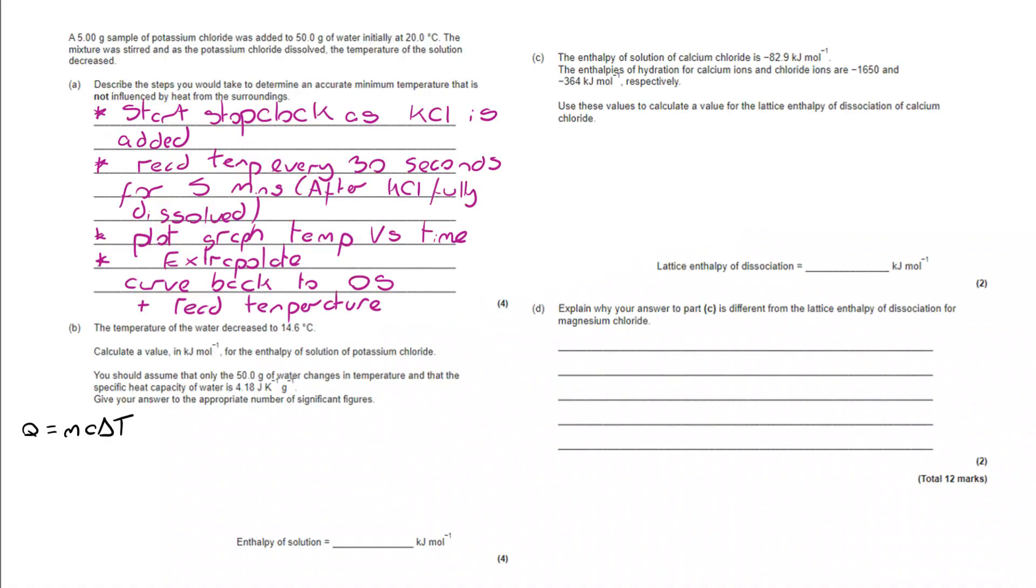Let's move back to the question, part B. And we have got here a Q is MC delta T question. I've color coded so we can see where these numbers have come from. Remember, the heat capacity of water will always be given. The temperature change has been provided up here, highlighted in purple. The mass is the mass of the surroundings. We're interested in the fact we're heating up 50 grams of water, not the fact that we used 5 grams of potassium chloride.